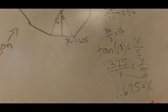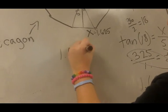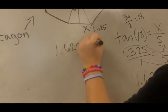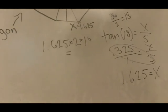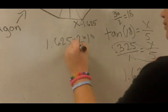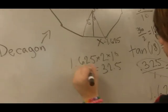To find the perimeter, you multiply that by 2 and by the number of sides. That will equal 32.5, and that's the perimeter.